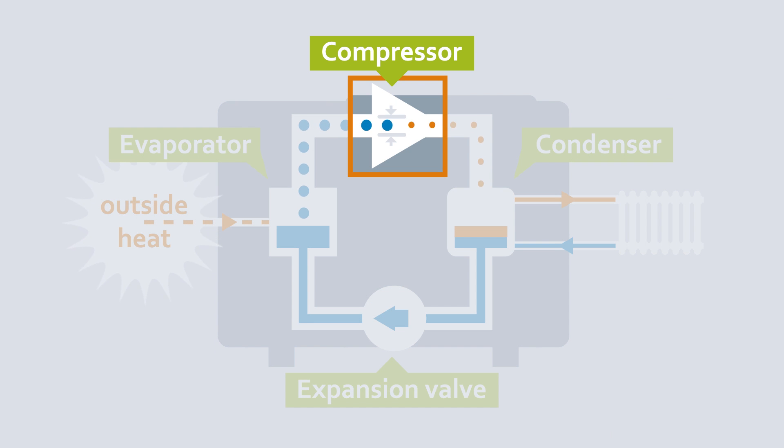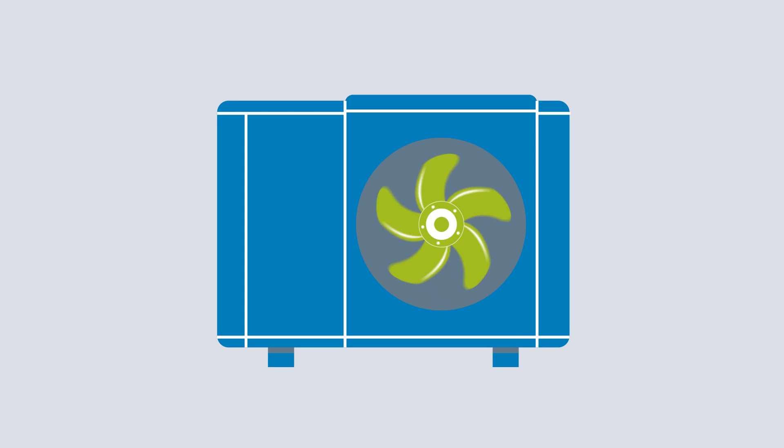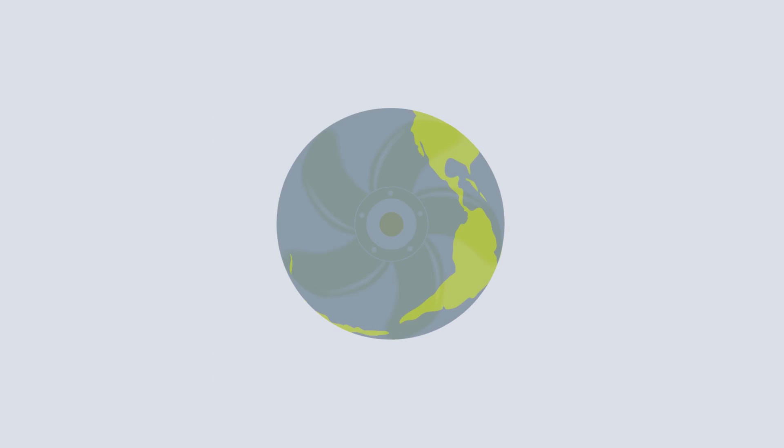As a rule, the electric compressor requires the most additional energy inside the heat pump. But other components such as the fan also consume electricity and can therefore help to save energy and money.